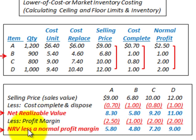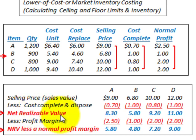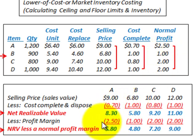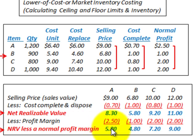For our floor value, that's the net realizable value less the normal profit margin. We subtract the profit margin from the net realizable value. The normal profit margin on a per unit basis is shown in our data. Subtracting that profit margin from the net realizable value for each item gives us the net realizable value less the normal profit margin — that's our floor limit.